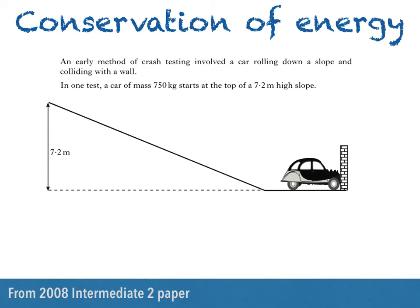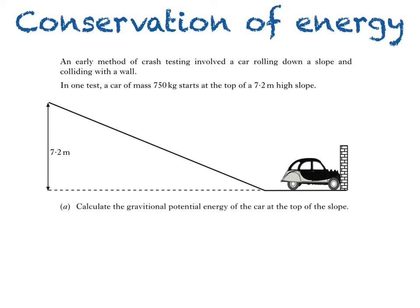Part A of the question asks us to calculate the gravitational potential energy of the car at the top of the slope. The equation to use here is this one. Ep is equal to mgh. Where m is the mass in kilograms, g is gravitational field strength, which is found in the datasheet at the start of the exam, and h is height.